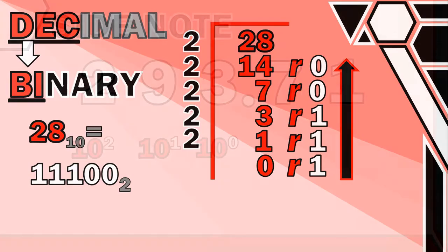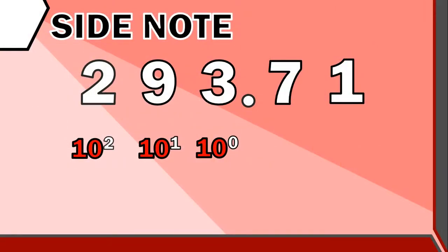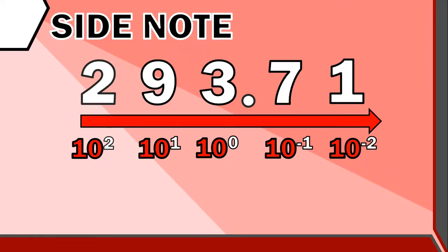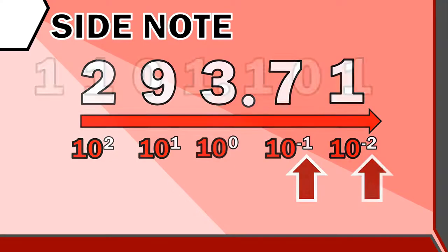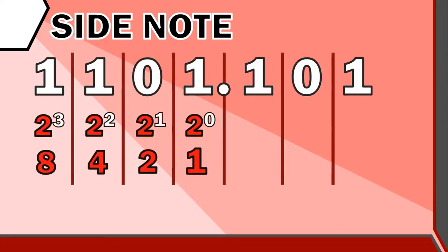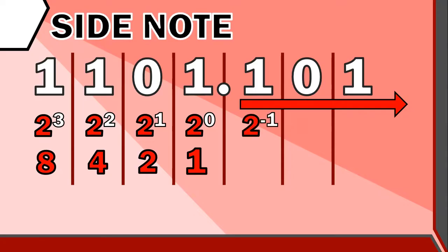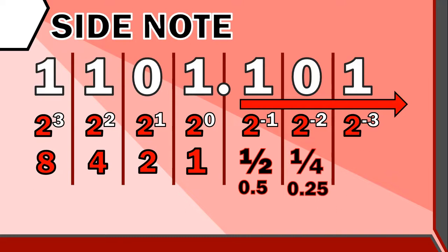By the way, when you have fractions in decimal numbers, we technically use 10⁻¹, 10⁻², and so on — we just follow the natural sequence of numbers past zero into the negatives. The same applies to binary fractions: beyond 2⁰ going right, we use 2⁻¹, 2⁻², 2⁻³, and so on. Since 2⁻¹ = 1/2 = 0.5, you can use your calculator for the others — so technically you can also work out fractions in binary.